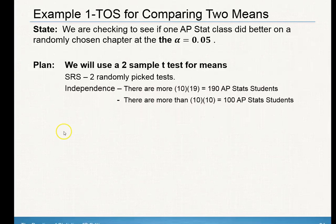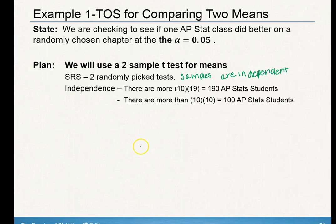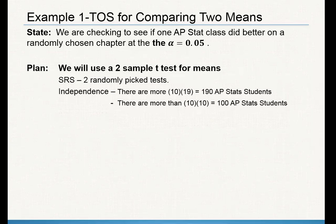For this one, we are showing that it is a simple random sample of two randomly picked tests. Those two tests also need to be independent of each other — not just the simple random sample, the samples are also independent, because we cannot use a two-sample test if they're not. The next condition is independence: the population is more than 10 times the sample size for both of your samples.